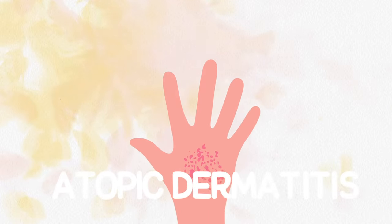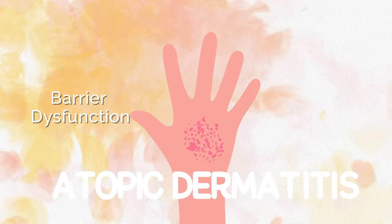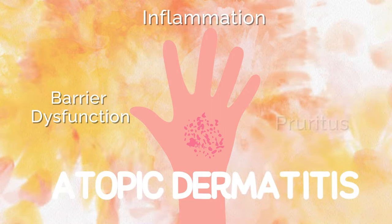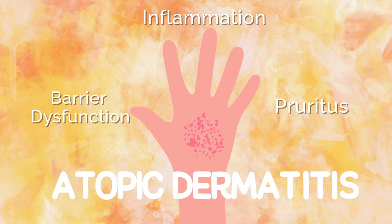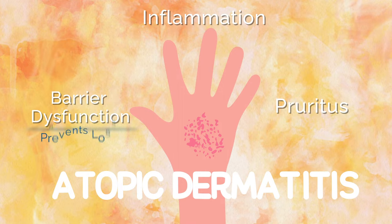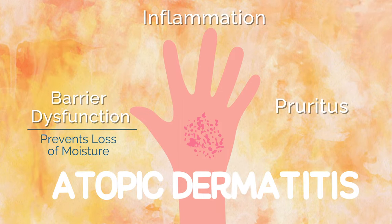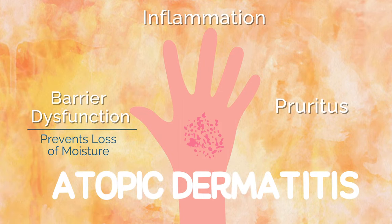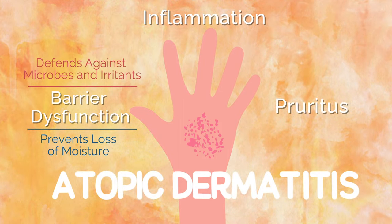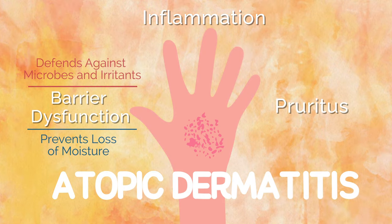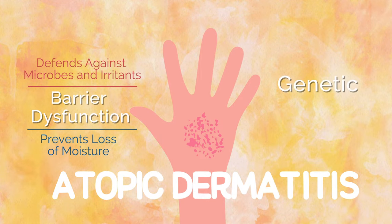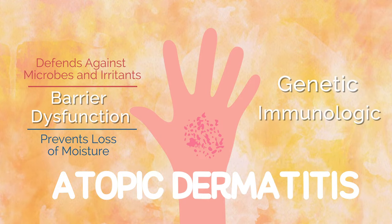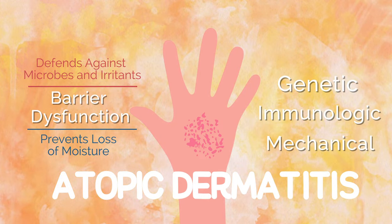Atopic dermatitis is characterized by barrier dysfunction, inflammation, and pruritus. Integrity of the skin barrier is crucial because it prevents the loss of moisture and it acts as a first line of defense against injury from microbes and irritants. Barrier dysfunction in atopic dermatitis is the result of genetic, immunologic, and mechanical factors such as scratching.